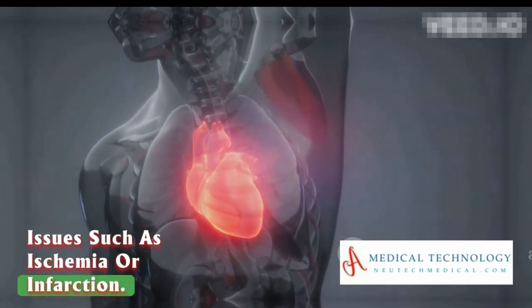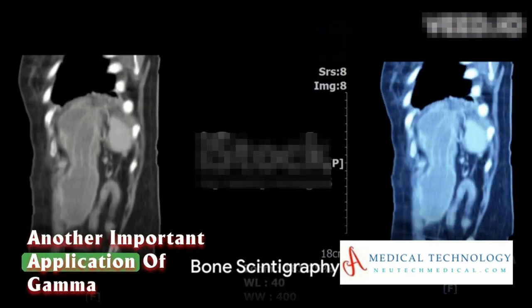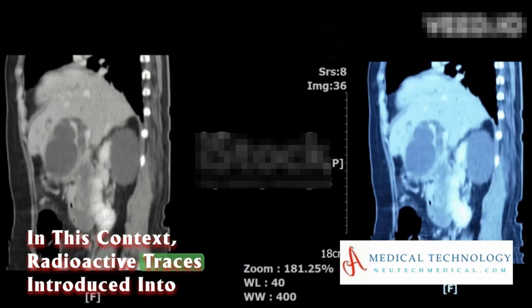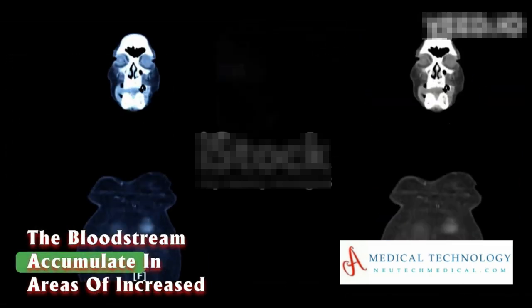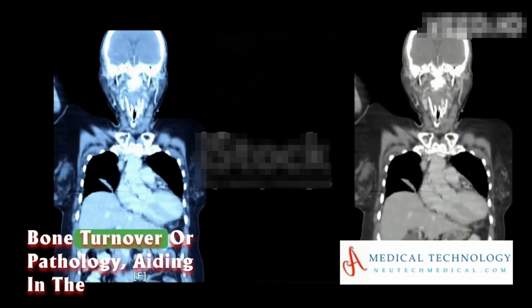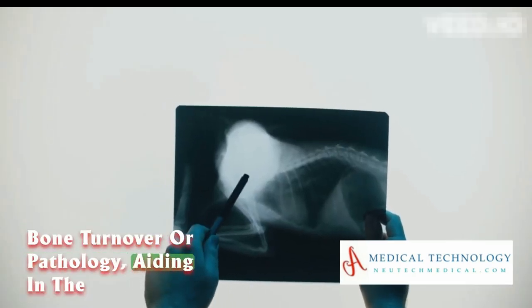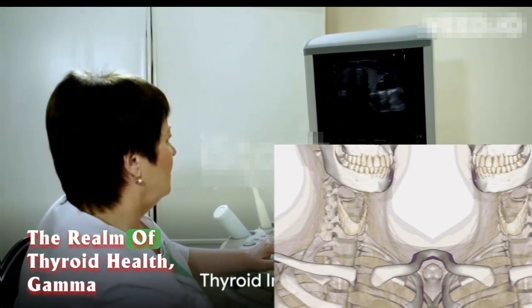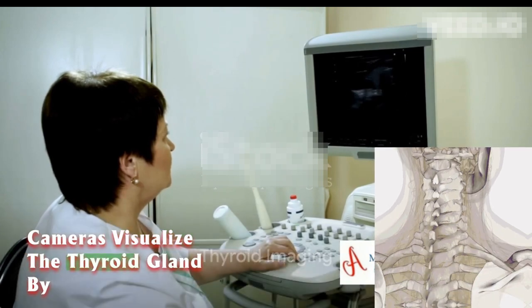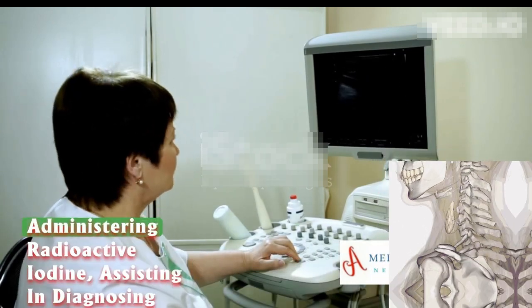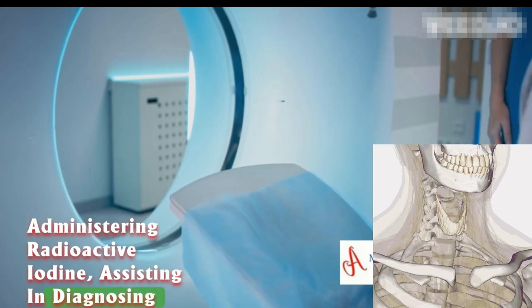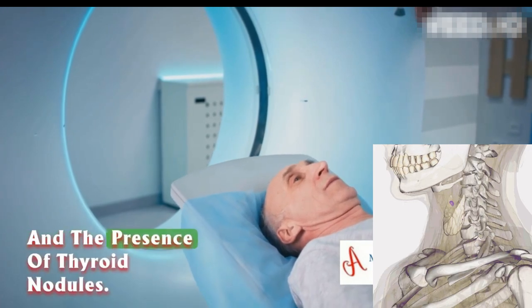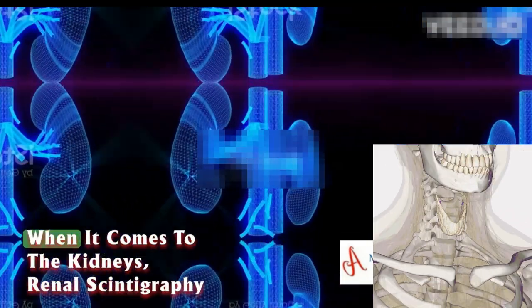Another important application is bone scintigraphy. Radioactive tracers introduced into the bloodstream accumulate in areas of increased bone turnover or pathology, aiding in the identification of fractures, infections, or tumors. In the realm of thyroid health, gamma cameras visualize the thyroid gland by administering radioactive iodine, assisting in diagnosing disorders such as hyperthyroidism, hypothyroidism, and thyroid nodules.